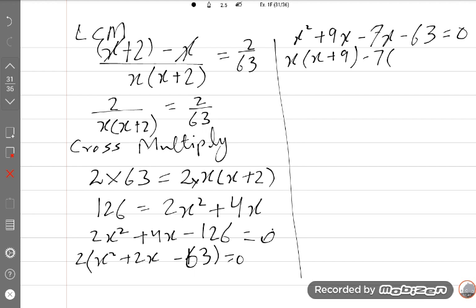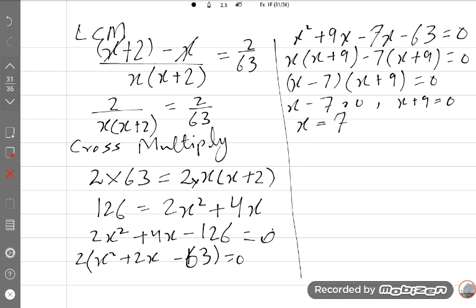Taking common factor again, X plus 9 and minus 7 will be common, giving X plus 9 equals 0. So X minus 7 times X plus 9 equals 0. X minus 7 equals 0, X plus 9 equals 0. One value of X is 7, and the second will be minus 9, which is impossible.